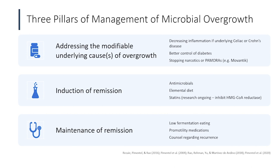Dr. Nessa discussed the three pillars of management of microbial overgrowth. Most importantly, we need to identify underlying causes and modify risk factors — for example, optimizing blood sugar control in diabetic patients. Then induction of remission through antimicrobial therapy or antibiotic or elemental diet. For IMO, there is ongoing research into statin therapy given the cell wall differences, and some small data on yeast extract related to H-form and L-form of lovastatin. Ongoing research is needed in this area.